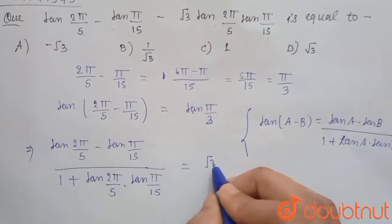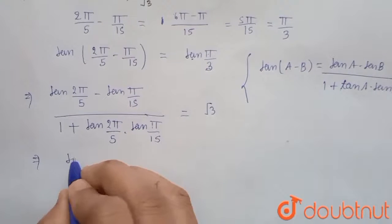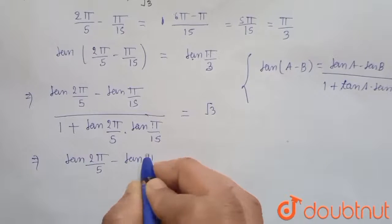5 minus tan π by 15 equals √3 plus √3 into tan 2π by 5 into tan π by 15.